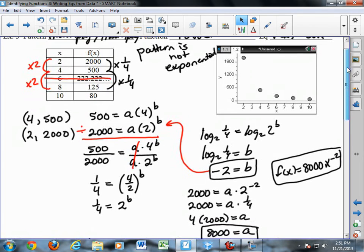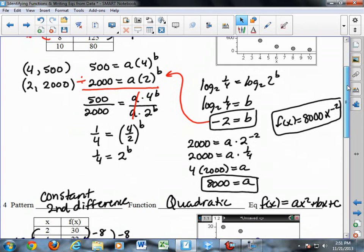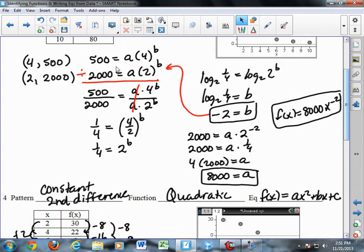I'm going to pick two points. Once again, putting the one with a higher x value on top, substituting 500 for y and 4 for x, which is now the base. So 500 equals a times 4 to the b. 2,000 equals a times 2 to the b. Dividing the first equation by the second, I get 500 over 2,000 equals a times 4 to the b over a times 2 to the b. The a's cancel.